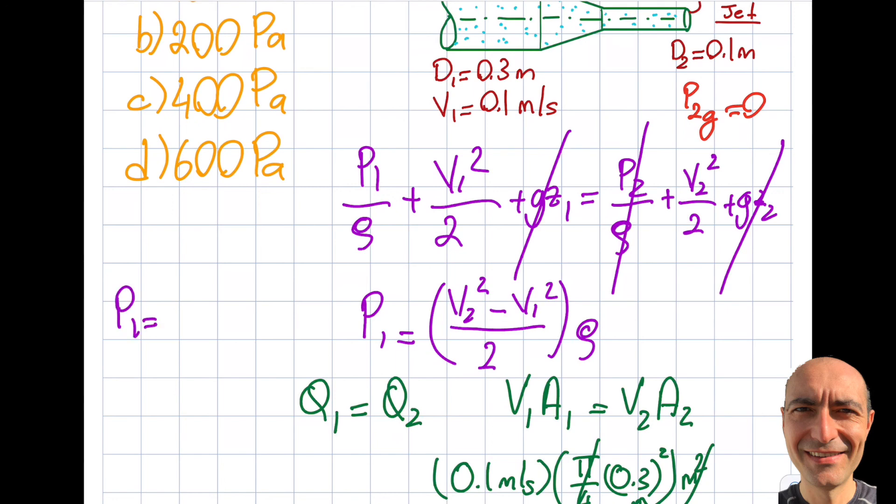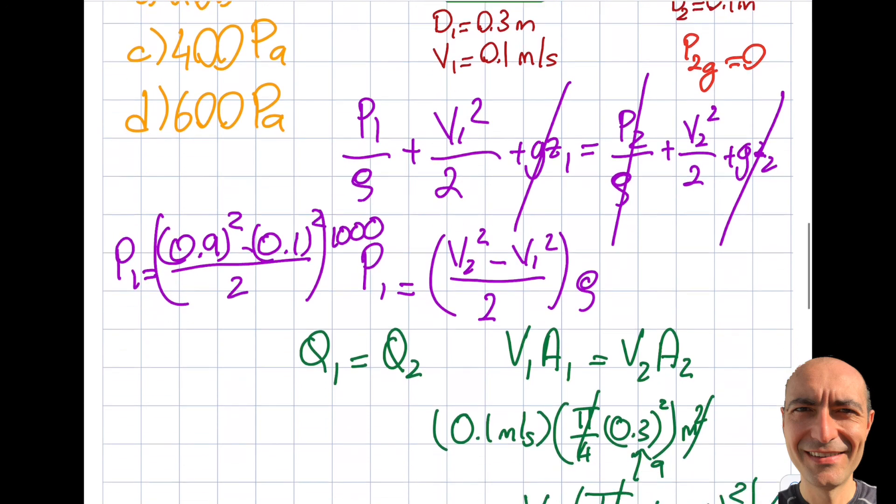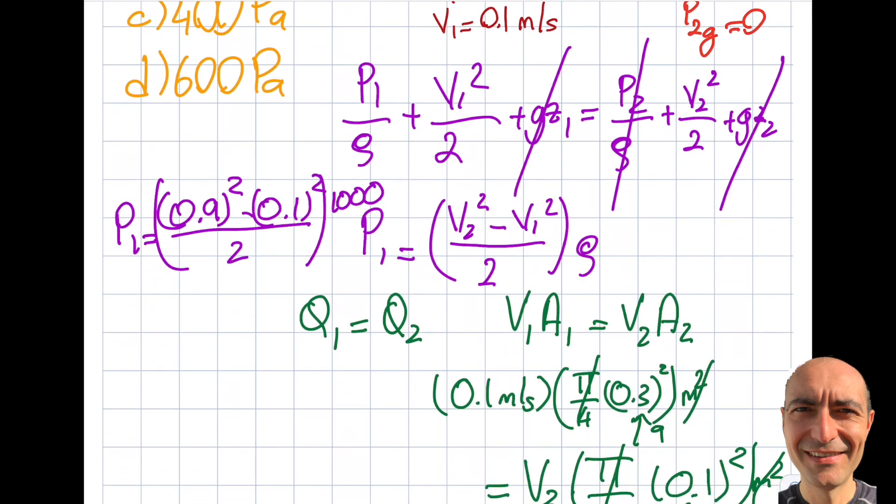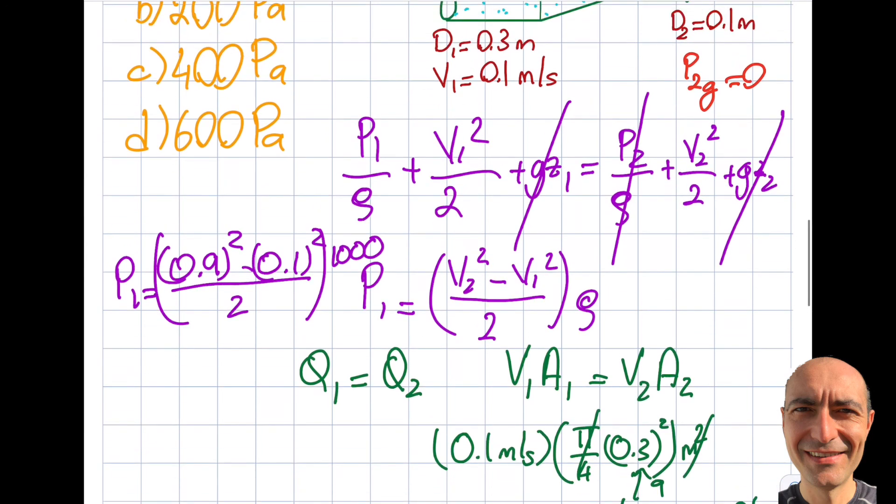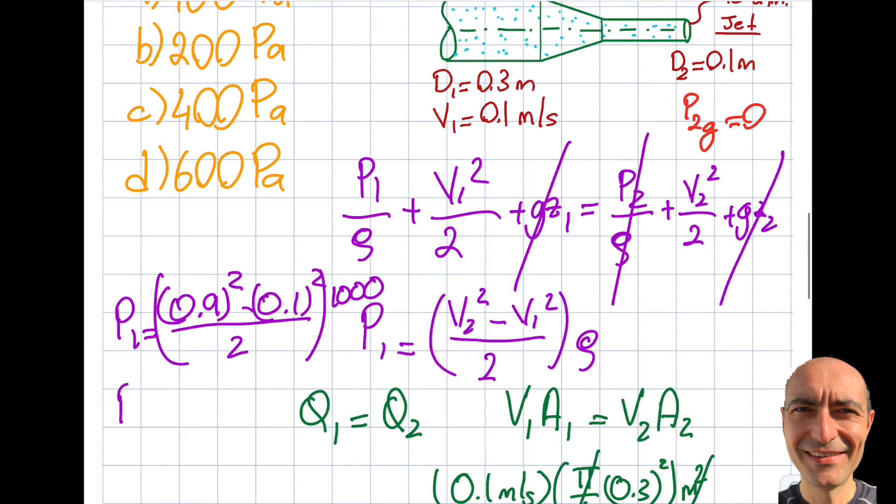P1 equals 0.9 squared minus 0.1 squared divided by 2 times 1000. If I do this: 0.81 minus 0.01 is 0.8, divided by 2 is 0.4, times 1000 equals 400 Pascals in gauge.